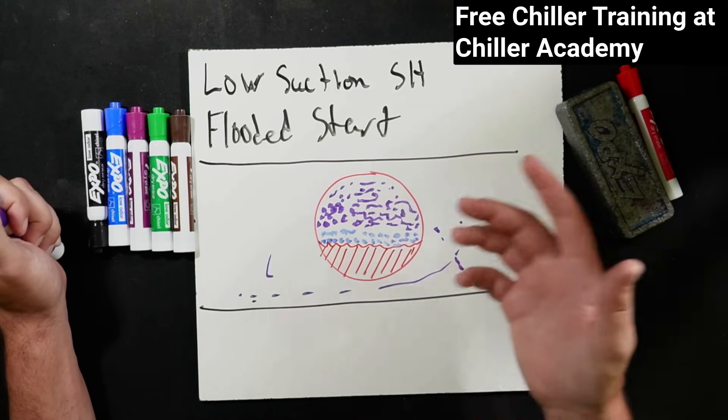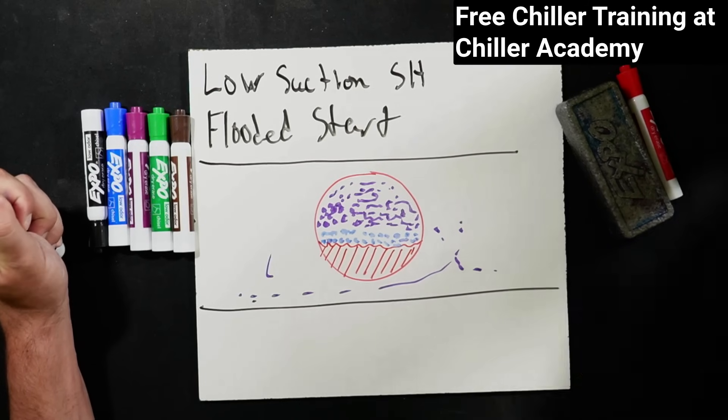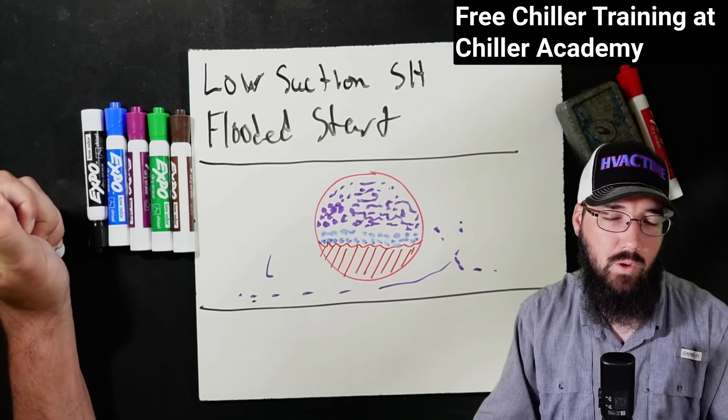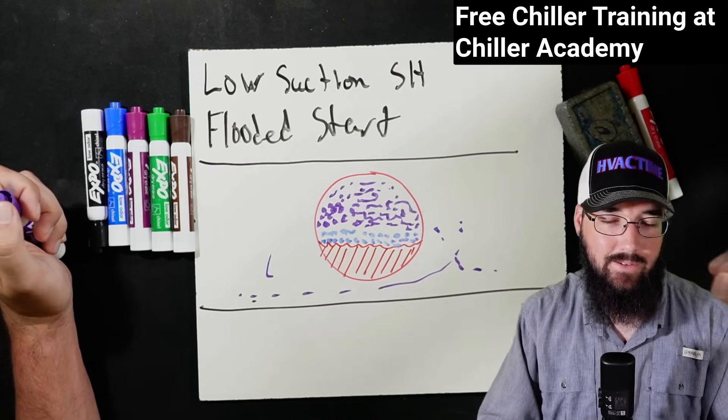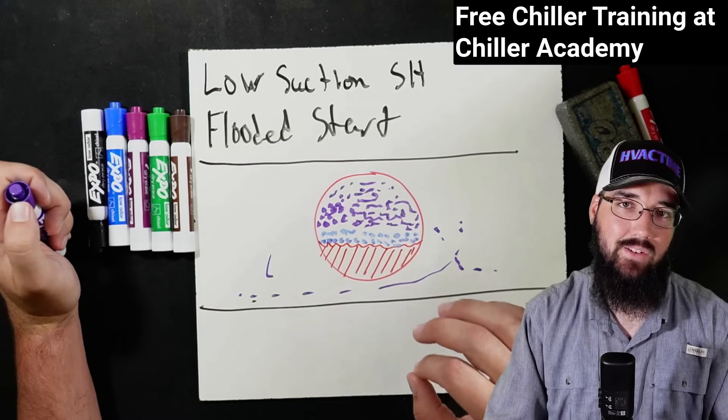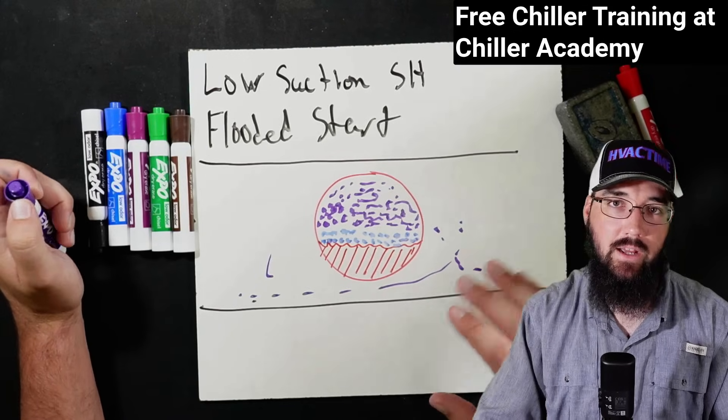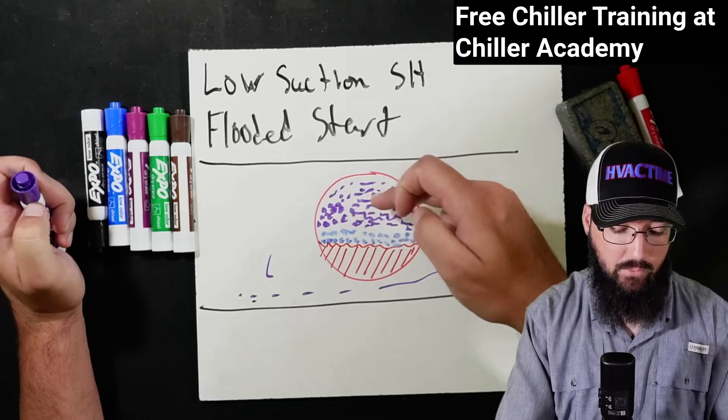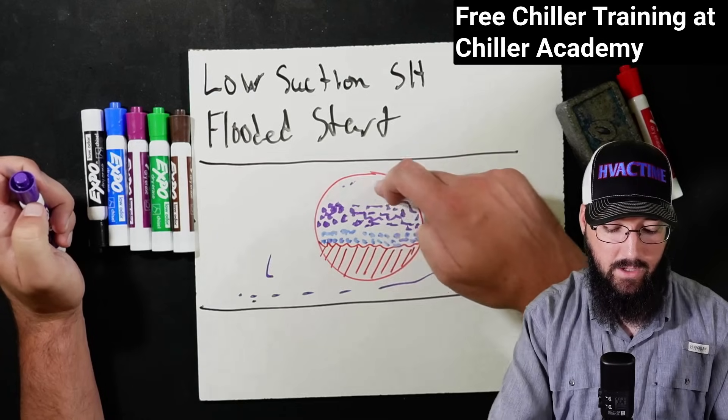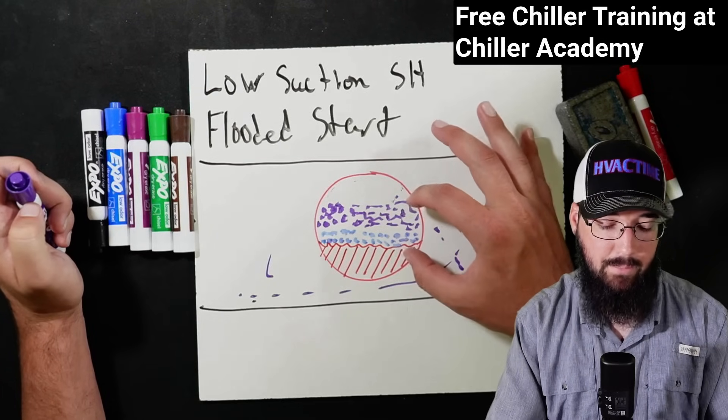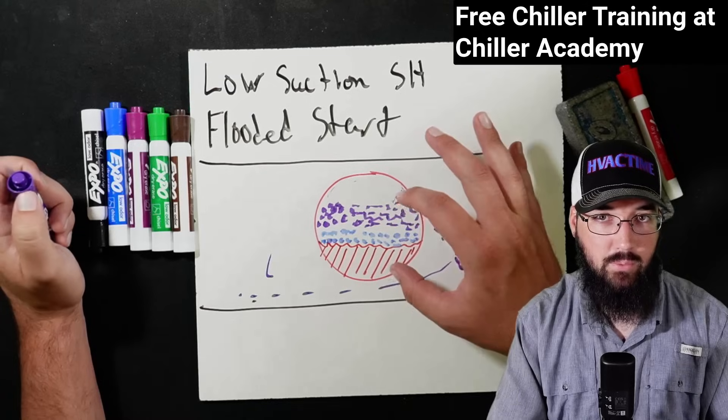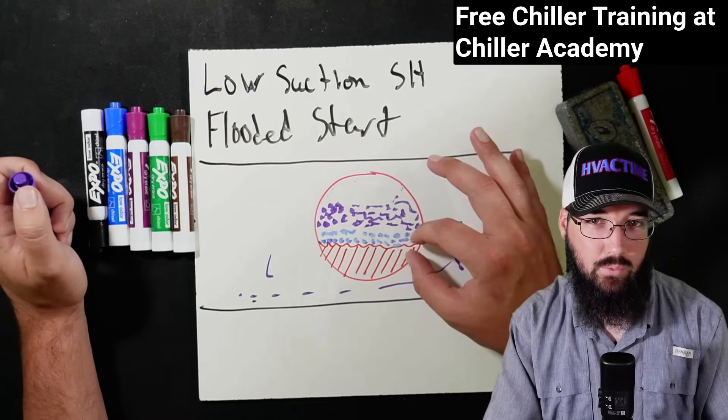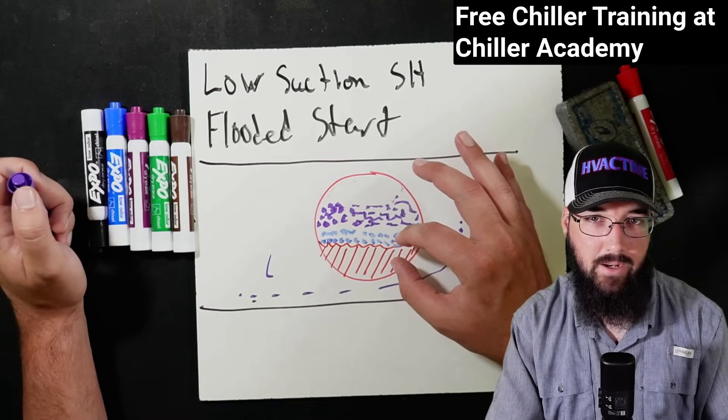I would consider that perfectly normal. I wouldn't be worried about that. It's when this escalates to the whole sight glass where a large portion, it doesn't have to be the incomplete sight glass. If we get to where we've got a full standing column of foam happening like this, that's when I want to investigate. I just want a teeny little layer if I'm going to have any at all.